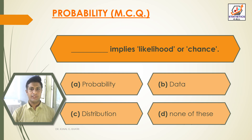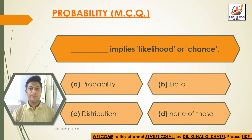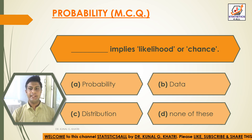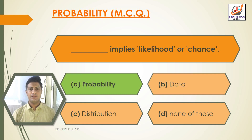First question: dash implies likelihood or chance. Option A: probability. Option B: data. Option C: distribution. Option D: none of these. The answer is Option A — probability, which implies likelihood or chance.